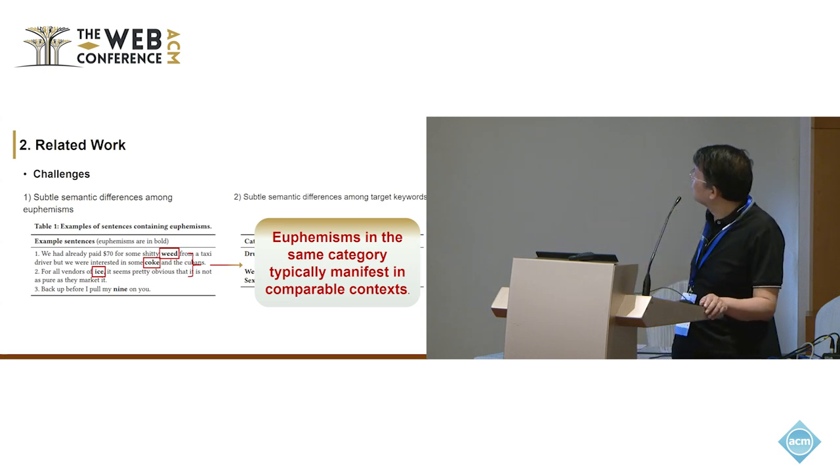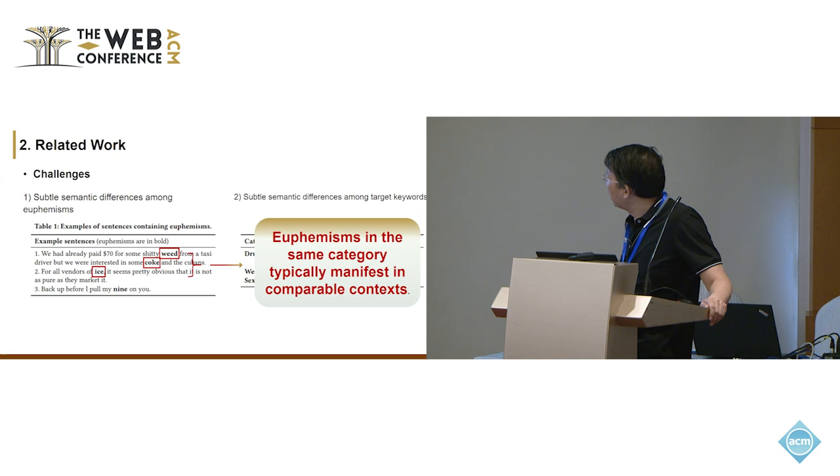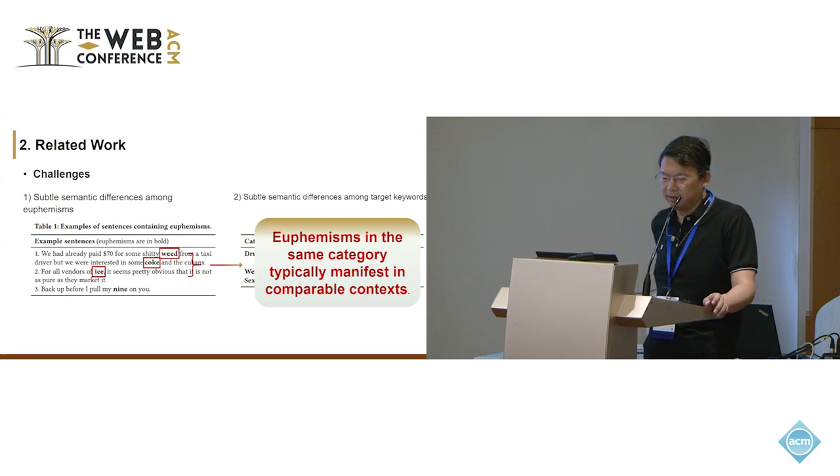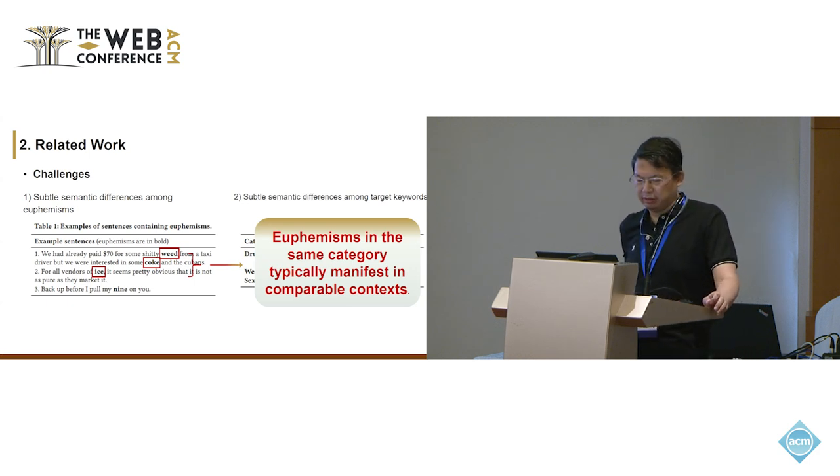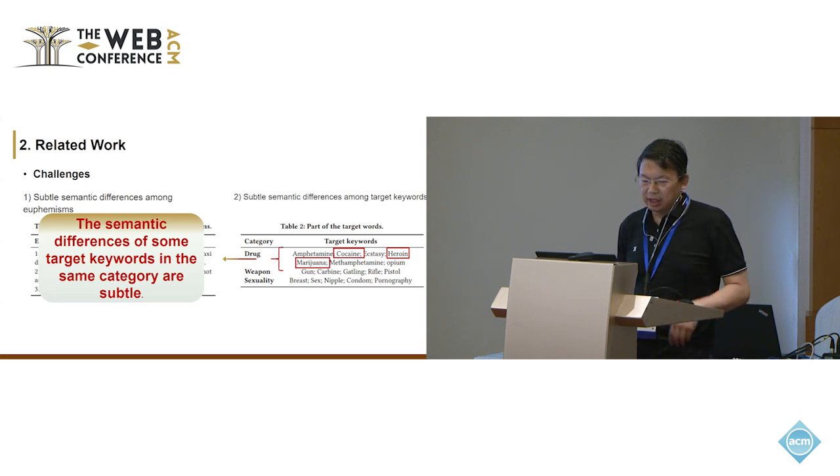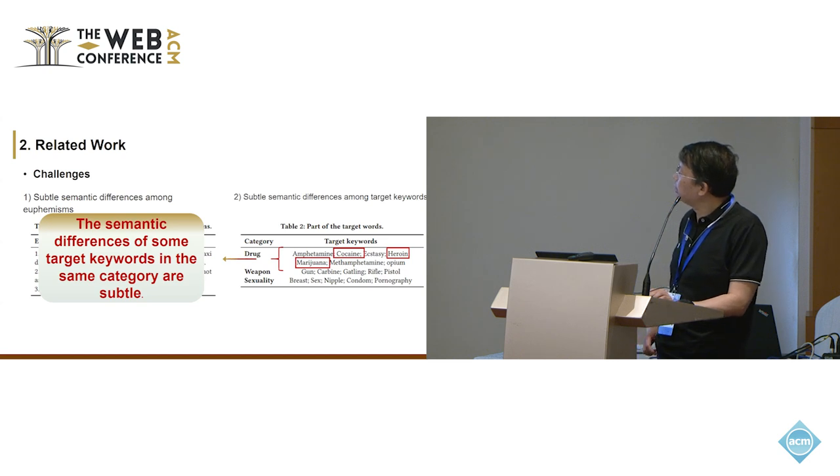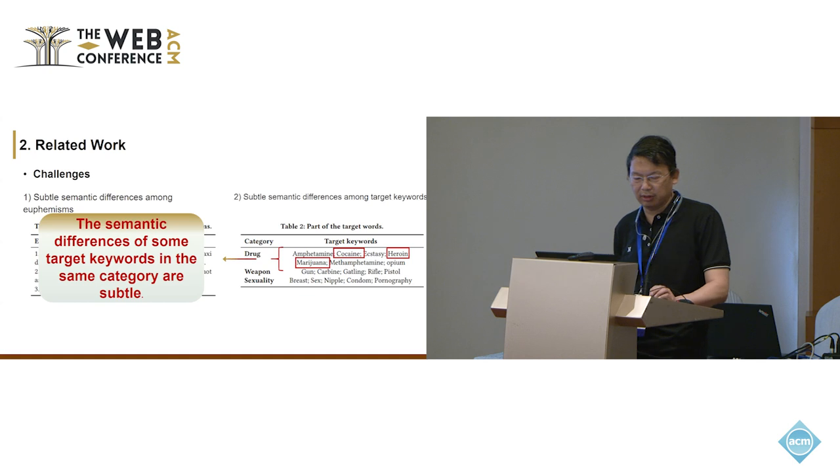First, there is a subtle semantic difference among euphemisms. The left figure shows sentence number one. There are two euphemisms, but they have the same context. We can find two different euphemisms but they can get nearly identical context. Second, the semantic difference of different target keywords in the same category may be subtle, such as the red figures: gun, rifle, belonging to weapon categories. They have similar meanings.